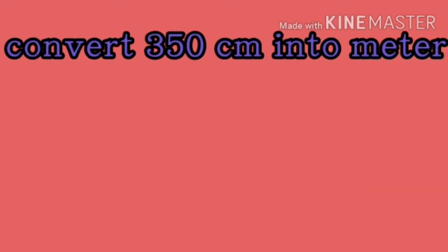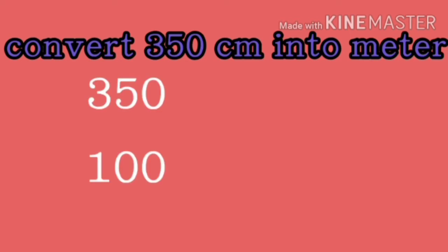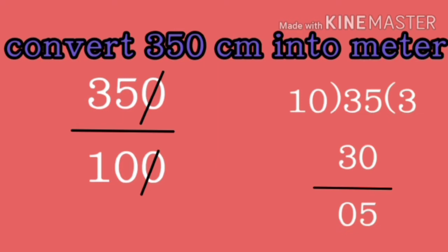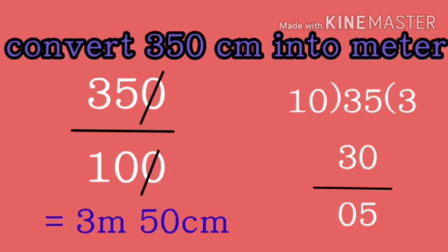Now, let us convert 350 centimeter into meter. Let us divide 350 by 100. Cancel the zero and divide 35 by 10. We get 3.5. Answer is 3 meter and 50 centimeter.